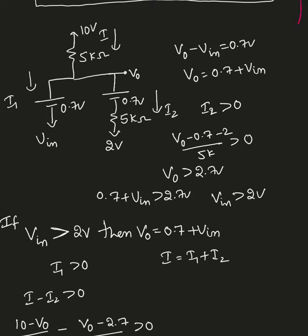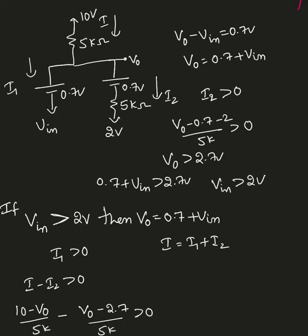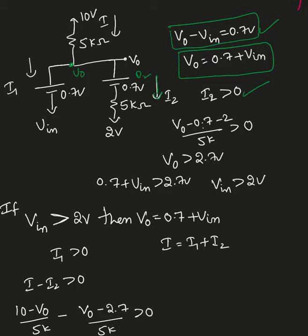With both diodes closed, V_out minus 0.7 minus V_n equals 0.7V, so V_out = 0.7 plus V_n. To find the condition, the current through D2 (I2) must be greater than 0: V_out minus 0.7 minus 2 divided by 5k must be greater than 0, meaning V_out must be greater than 2.7 volts.